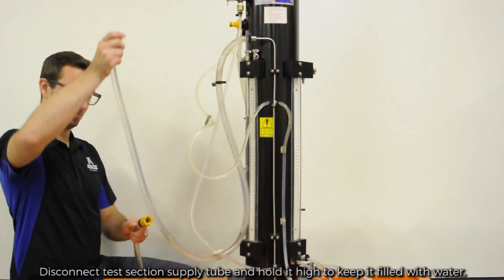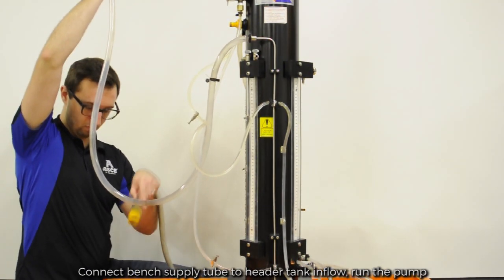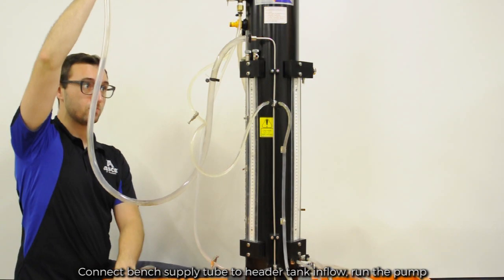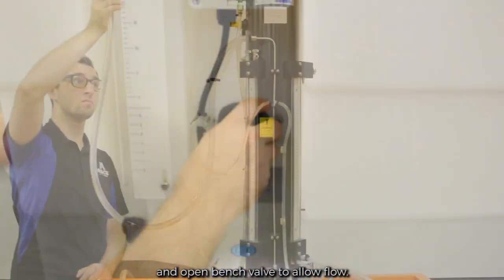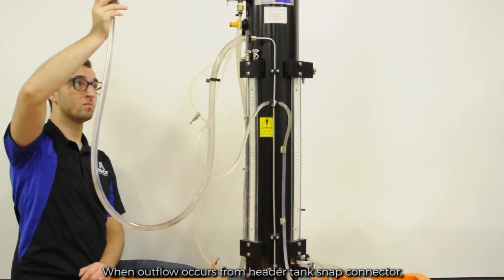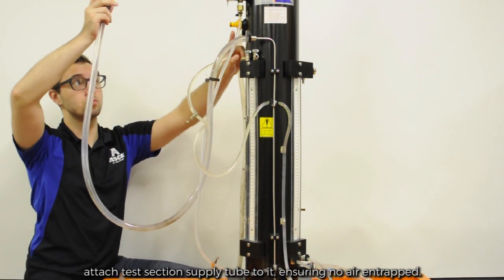Disconnect the test section supply tube and hold it high to keep it filled with water. Connect bench supply tube to header tank inflow, run the pump, and open bench valve to allow flow. When outflow occurs from header tank snap connector, attach test section supply tube to it ensuring no air is entrapped.